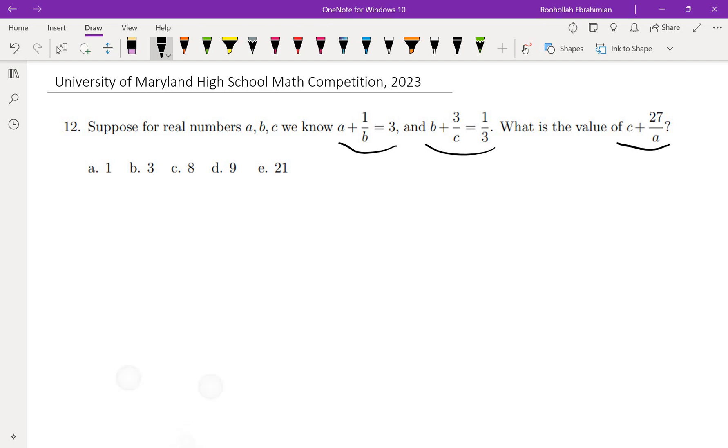We're going to take the first equation and solve it for b. We get 1 over b equals 3 minus a, so b would be 1 over 3 minus a.